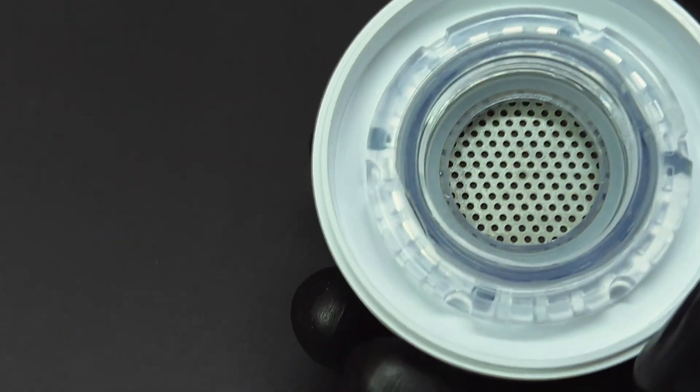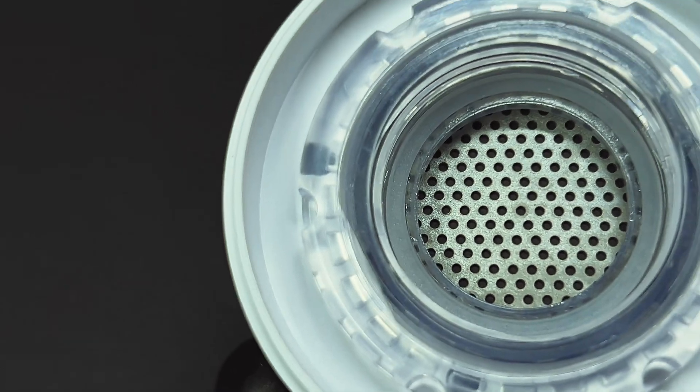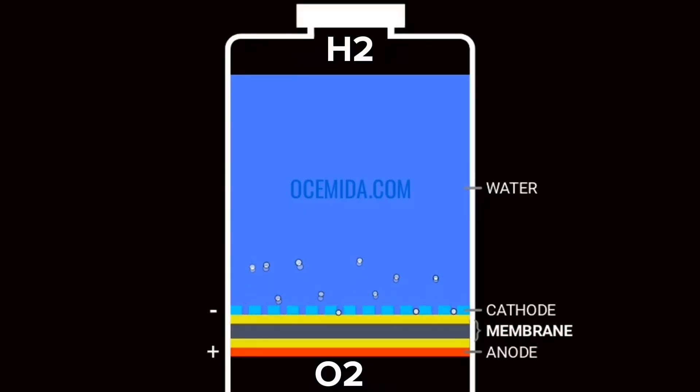The PEM is the unsung hero of our bottles. This specialized membrane is what separates hydrogen gas from water molecules during electrolysis. Over time, the PEM can naturally degrade. But don't worry, we've got you covered.